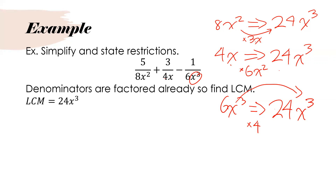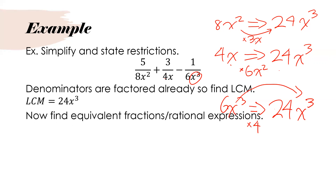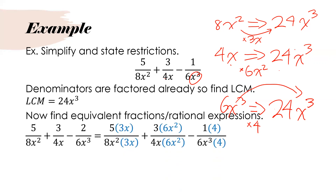Once you've found your common denominator of 24x cubed, you're figuring out how to go from the denominators you have now to the lowest common multiple. For the first fraction with denominator 8x squared, I need to go to 24x cubed by multiplying by 3x. Because I multiplied the denominator by 3x, I multiply the numerator by 3x as well — whatever you do to the denominator, you do to the numerator.